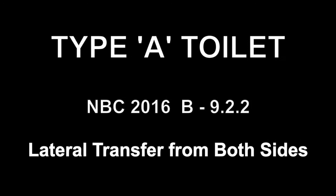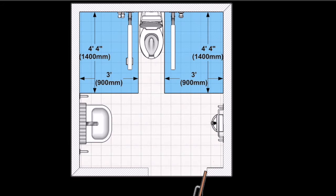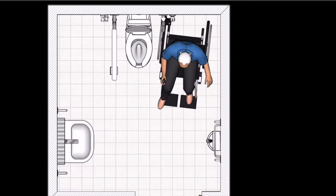Type A Toilet. The minimum dimensions for a Type A toilet room are 7 foot 3 by 7 foot 7, which is 2.2m by 2.3m. On both sides there should be a clear area of 4 foot 4 by 3 foot, which is 1400 by 900mm. The turning circle clear area is 5 foot 11, or 1800mm. These clear areas allow left or right side lateral transfer onto the commode.